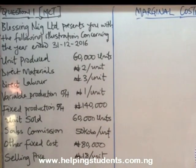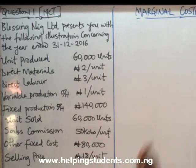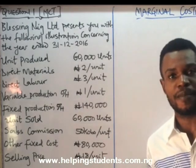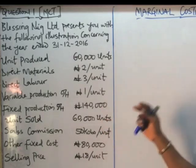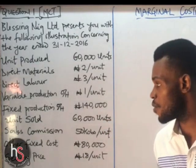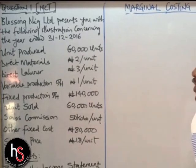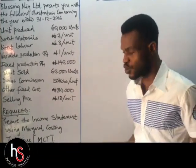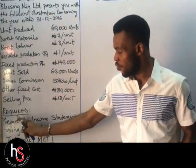We'll have a question. Blessing Nigeria Ltd. presents you with the following illustration concerning the year ended 31st December 2016. We'll have the units produced, the direct materials, direct labour, variable production overhead, fixed production overhead, units sold, and so on and so forth. Required.